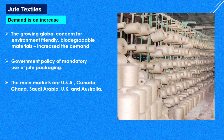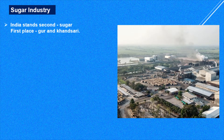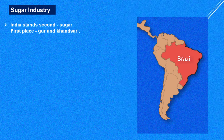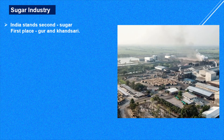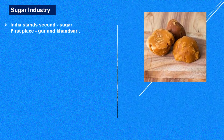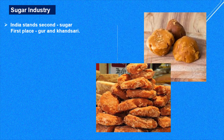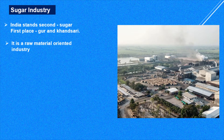India ranks second in the world in sugar production — the country that ranks first is Brazil. Whatever sugarcane is produced in the world, 50% comes from Brazil and around 25% from India. However, in production of gur and khandasari — that is jaggery — India ranks first. Sugar industry is a raw material oriented industry, meaning that wherever sugarcane is produced, near those areas only we will find sugar industries.